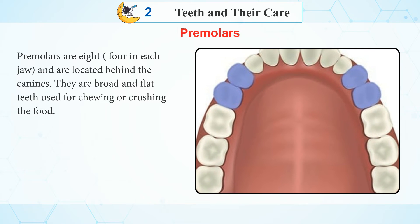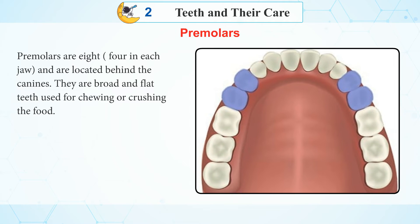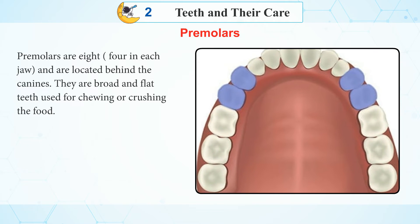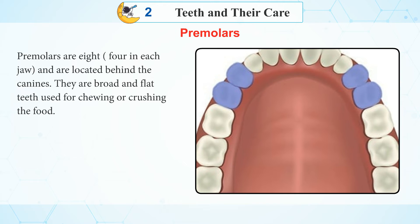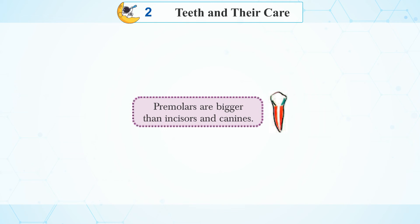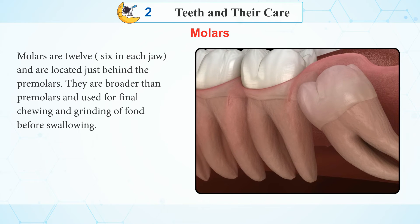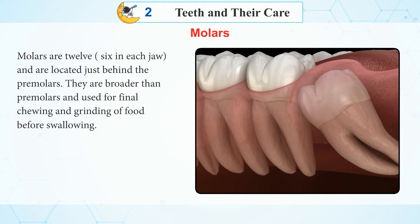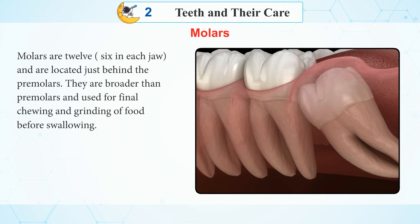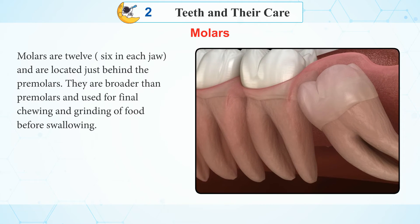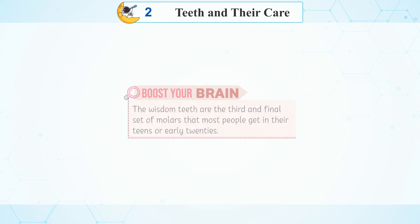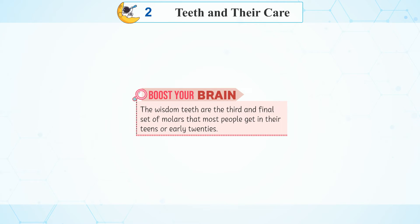Premolars. Premolars are eight — four in each jaw and are located behind the canines. They are broad and flat teeth used for chewing and crushing the food. Premolars are bigger than incisors and canines. Molars are twelve — six in each jaw and are located just behind the premolars. They are broader than premolars and used for final chewing and grinding of food before swallowing. The wisdom teeth are the third and final set of molars that most people get in their teens and early twenties.